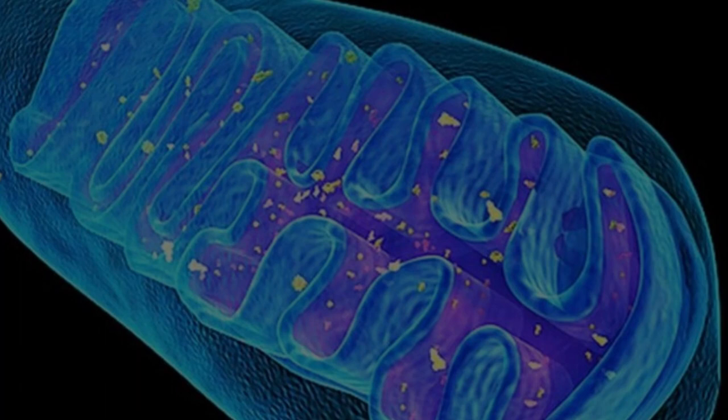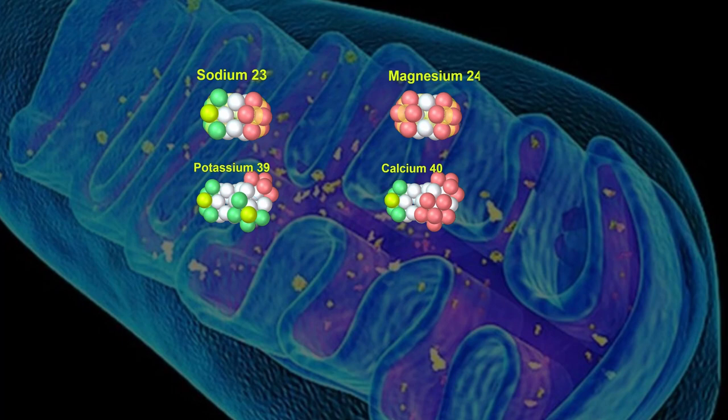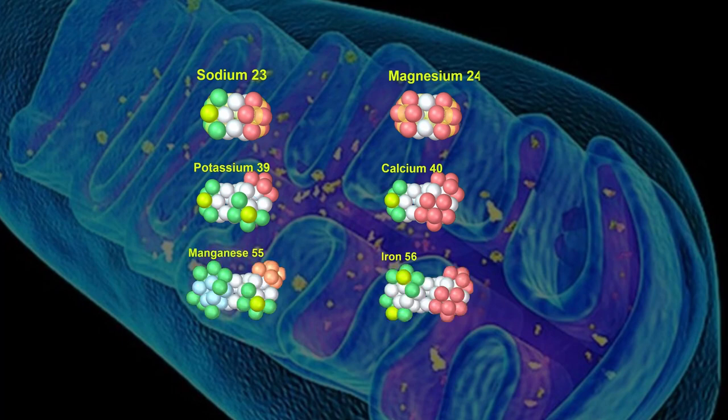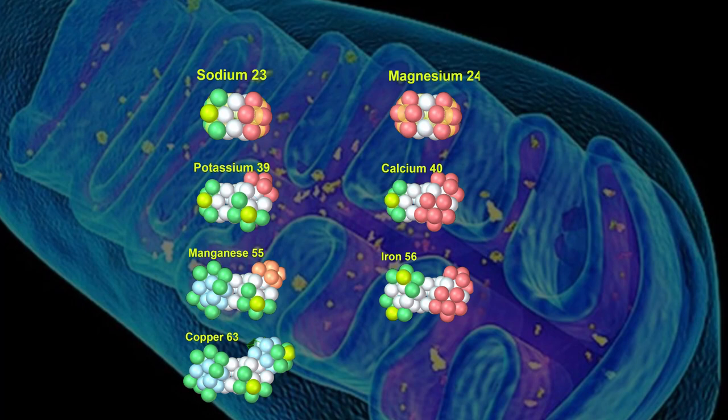The presence of iron pairs, sodium-magnesium, potassium-calcium, and manganese iron give strong support to this idea. Moreover, the additional pair copper and zinc they discovered also supports this. These are the only ions to have been discovered within the mitochondrion.